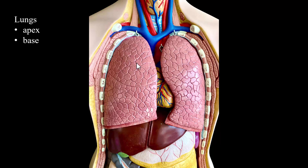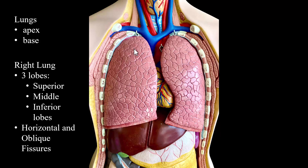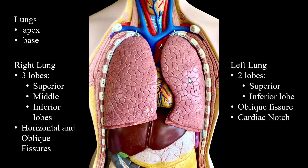Looking at the lungs, the lungs have an apex, which is the top, and a base, which is at the bottom. The right lung is going to have three lobes: a superior, a middle, and an inferior lobe, along with a horizontal fissure and a right oblique fissure. There's only one horizontal fissure because the left lung does not have one. The left lung has two lobes — a superior lobe and an inferior lobe — and a left oblique fissure.